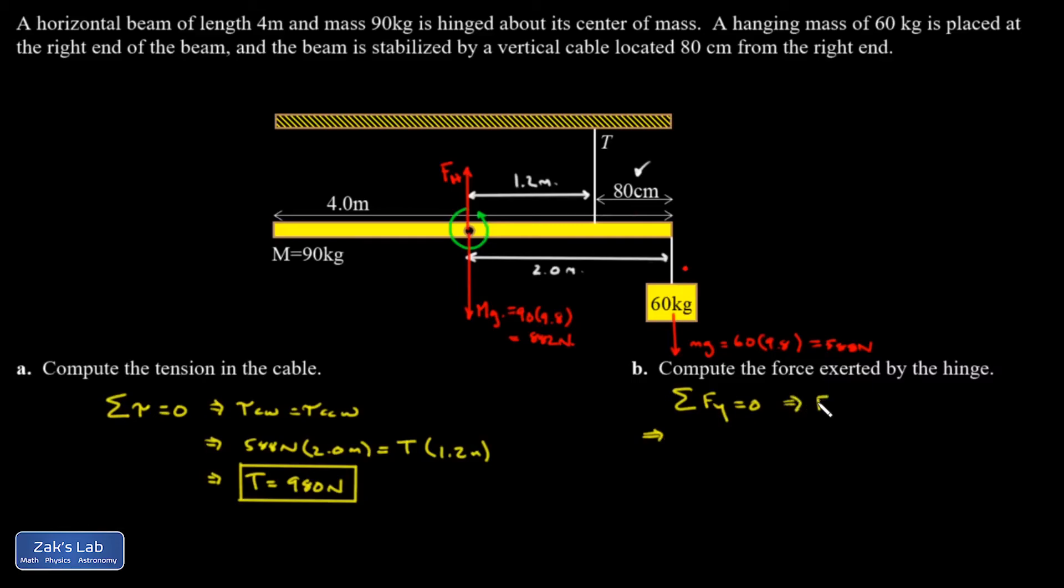That's the same as saying all the upward forces added together must be equal to all the downward forces added together. And my upward forces here are hinge force plus tension, and my downward forces are the 882 newtons from gravity pulling down on the stick plus 588 newtons from gravity pulling down on the hanging mass.